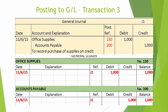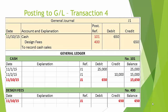Transaction number three: the debit to office supplies is posted to general ledger account 130. Note the entry of the general ledger account number in the posting reference column of the journal. Looking at the general ledger page for office supplies, we see the date November 6th, reference J1, a debit of 1,000, and a balance of 1,000 — a debit balance. The credit to accounts payable is entered in general ledger account 200. If you look at the accounts payable page, we see the date November 6th, reference J1, and a credit posting of 1,000 with an ending balance of 1,000 — a credit balance.